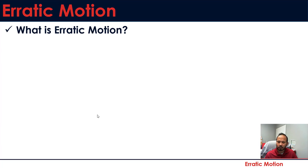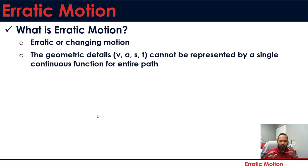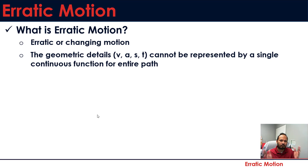So what is erratic motion? When you have a motion or a particle that is changing, that is erratic, that is not continuous, we can say it's erratic motion. To be more specific, when the motion of a particle — the geometric details: velocity, acceleration, position, and time — cannot be represented by a single continuous function for the entire path, that is erratic motion.